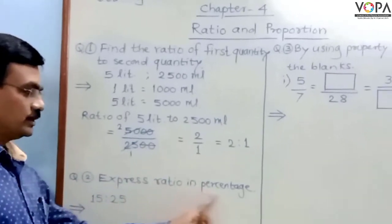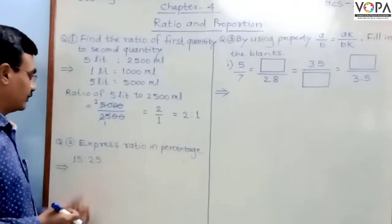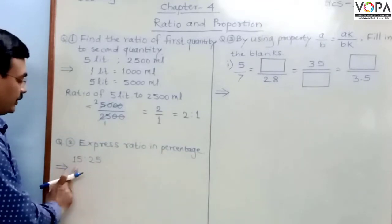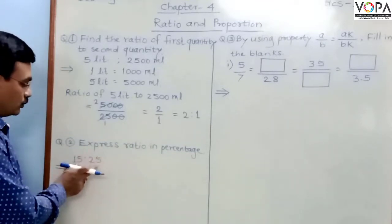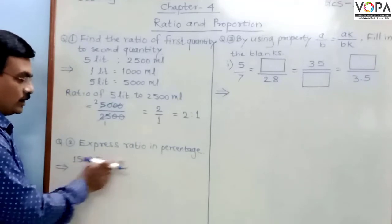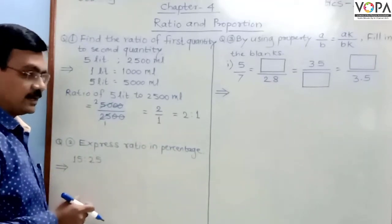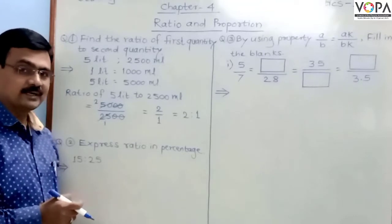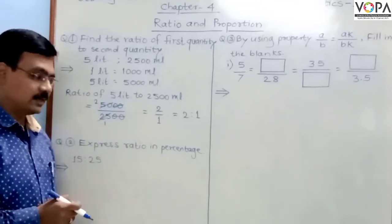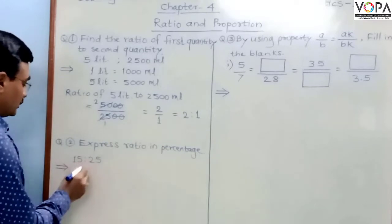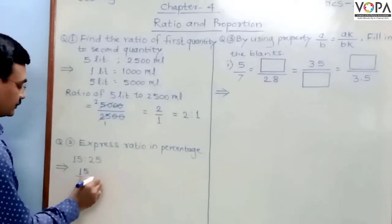The next example: express the ratio in percentage. The ratio given is 15 is to 25, and we have to convert this into percentage. In a percentage, the denominator must be 100, but the denominator of the given ratio is 25. Let us first write the given ratio as 15 upon 25.